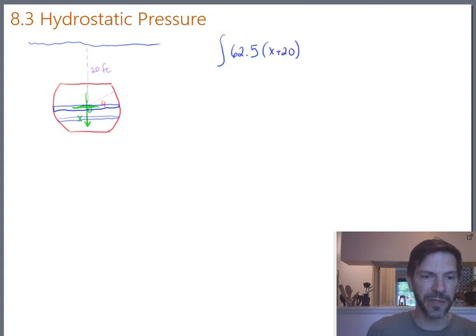Notice that even works above the origin. In other words, if x is negative one, depth is 19. So depth is always x plus 20. The height of one of our little rectangles is still a little change in x. x is still vertical for us. So we'll still have a dx on the end out here.